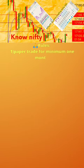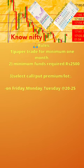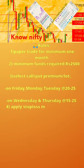Please follow the 7 rules below. 1. Paper trade for a minimum of 1 month. 2. Minimum funds required: 2,500. 3. Select call or put premium per lot — on Friday, Monday, Tuesday at the rate 20–25; on Wednesday and Thursday at the rate 15–25. 4. Apply stop loss of minimum 5 points.